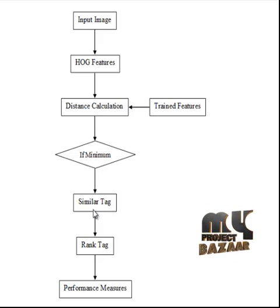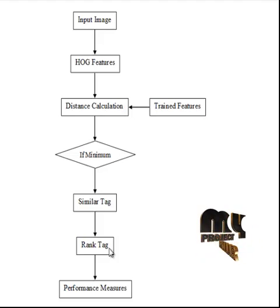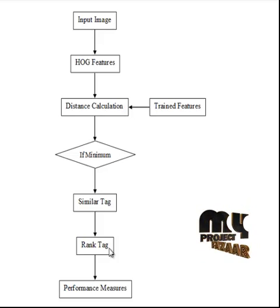The tag values for those images are obtained from the labels given as input. After identification of similar tags, the tags are ranked. This ranking process is done by removing duplicate tag values and arranging them based on distance measurements. Tags with the minimum distance values are placed first and tags with the maximum distance values are placed last.